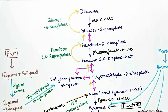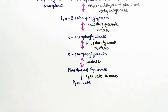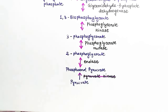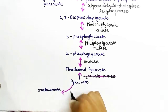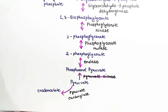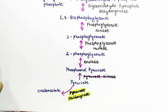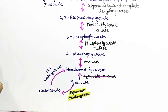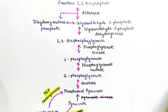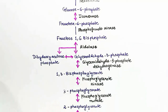To recap the gluconeogenesis pathway from pyruvate: starting from pyruvate going towards glucose, pyruvate cannot be directly converted to phosphoenol pyruvate. So pyruvate enters the mitochondria and is converted to oxaloacetate using pyruvate carboxylase. Oxaloacetate is then converted to malate, which exits the mitochondria and is converted back to oxaloacetate. That oxaloacetate is converted to phosphoenol pyruvate by phosphoenol pyruvate carboxykinase.